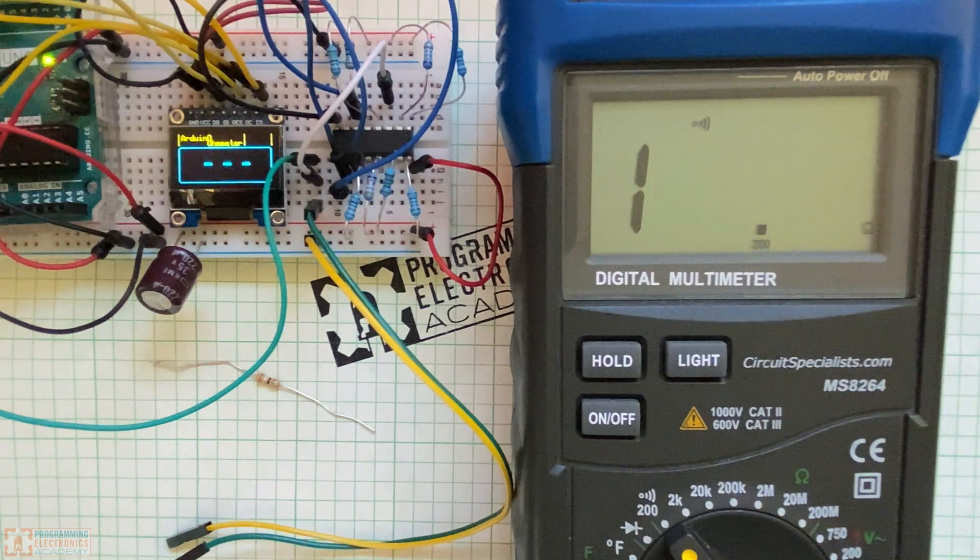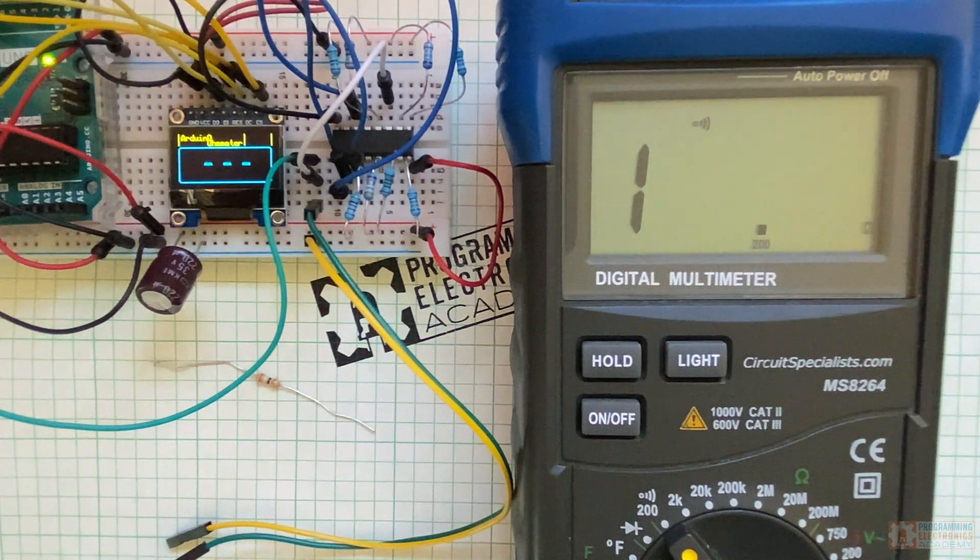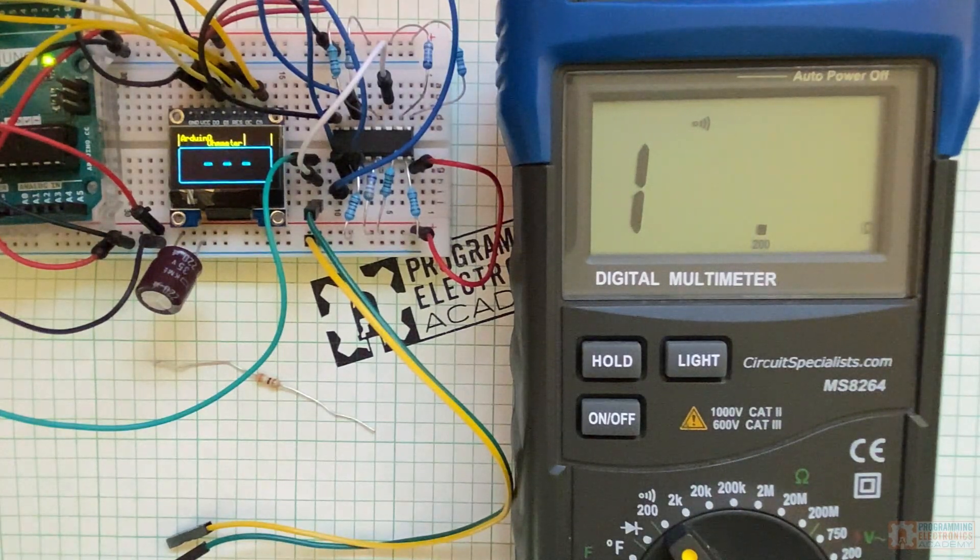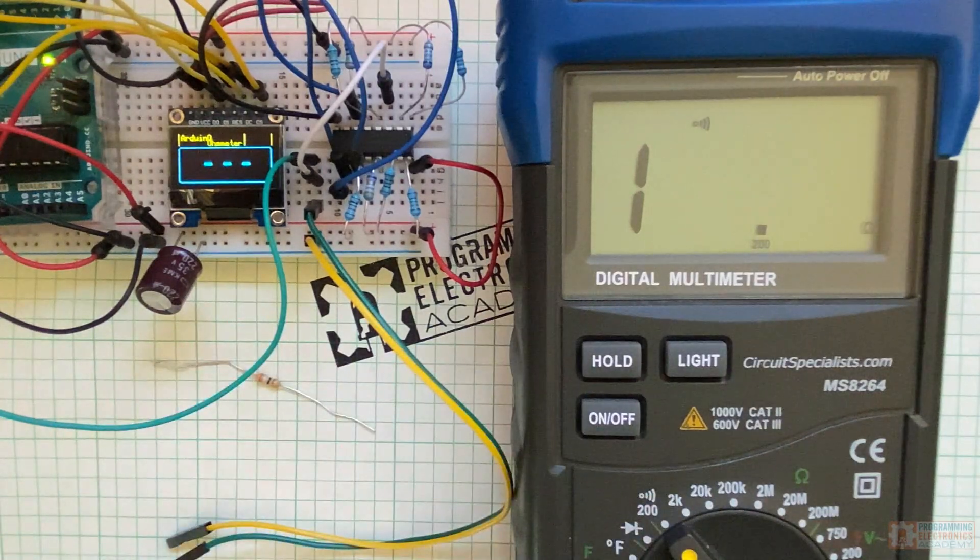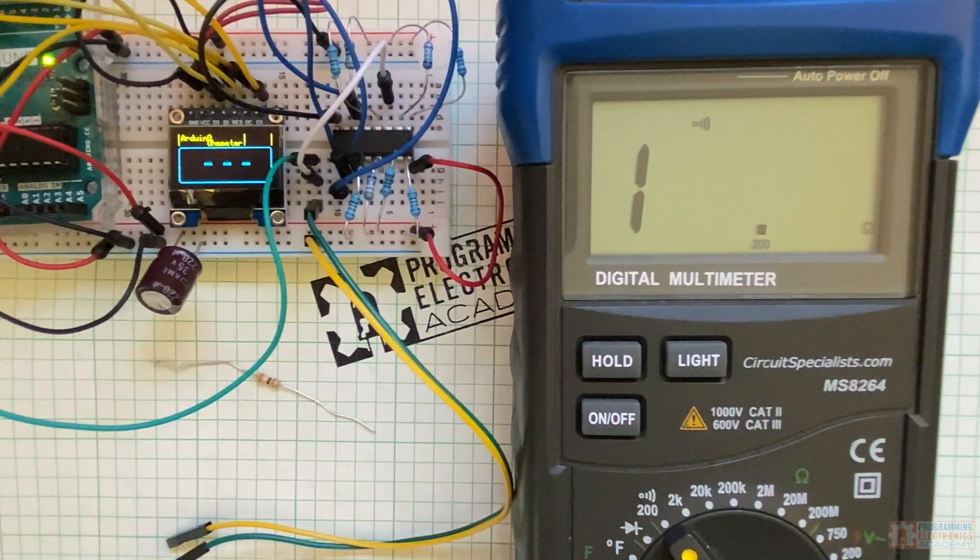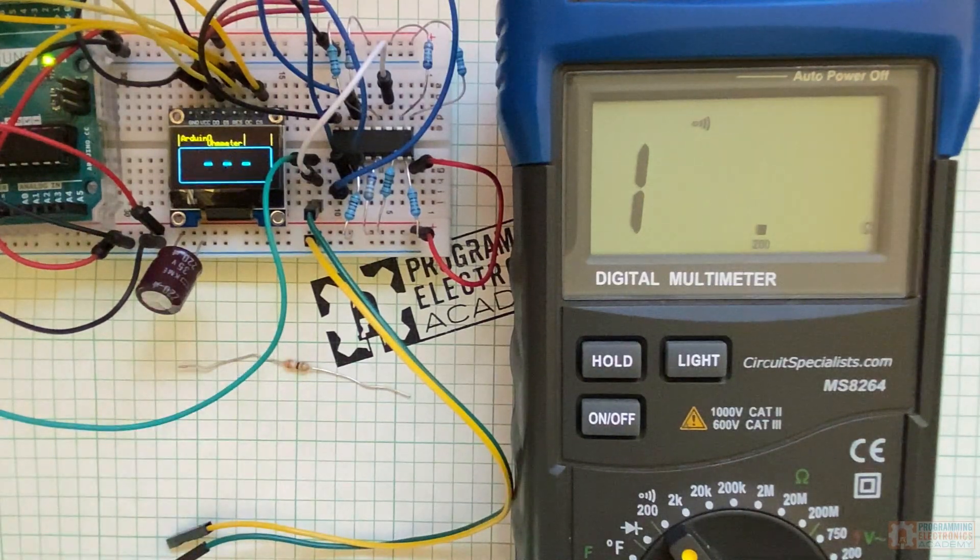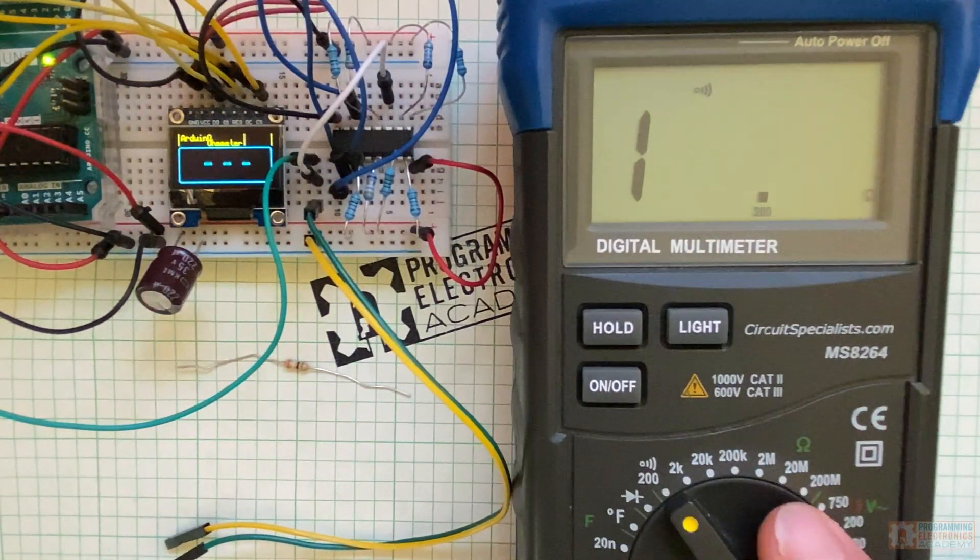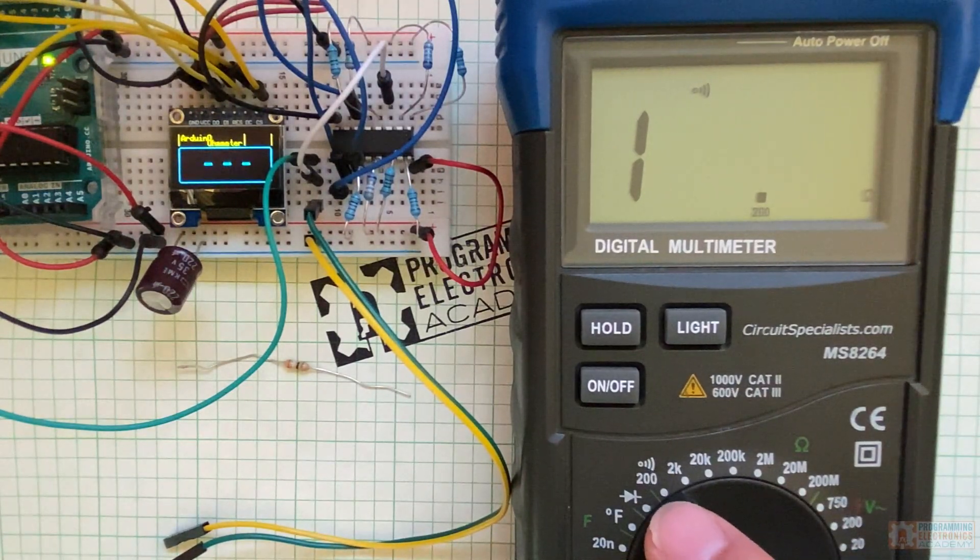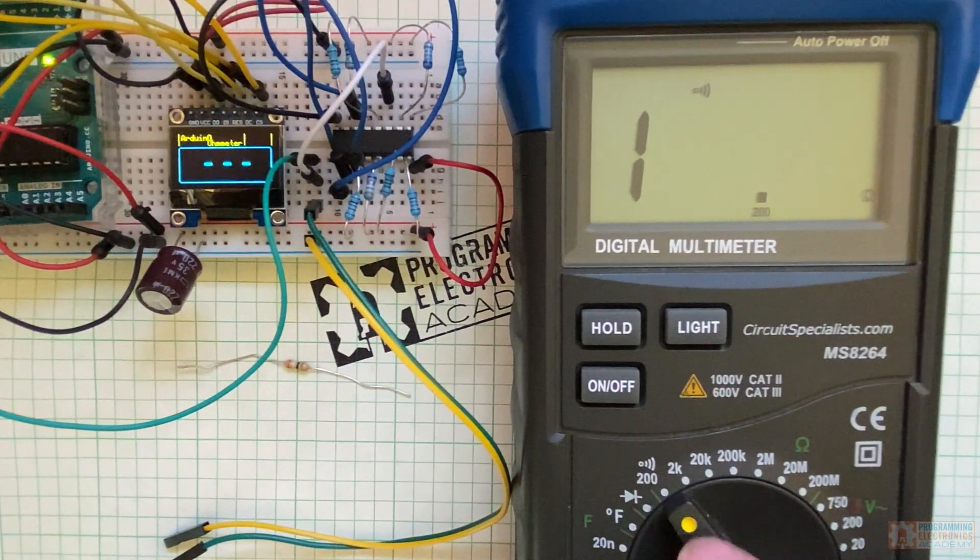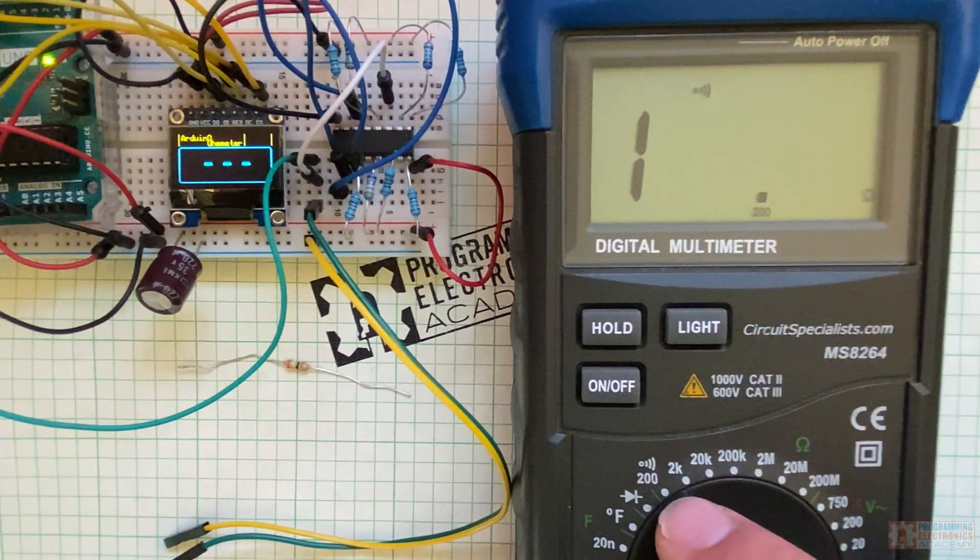Here we go. We are going to do a showdown between cheap Amazon multimeter and Arduino meter. Let's see who comes out on top. We are going to start with a 39-ohm resistor. This cheap multimeter, it's not auto-ranging, so I have to select it. And since we're doing a 39-ohm, I'm going to 200-ohms here. So I should be able to measure up to 200-ohms with this setting.